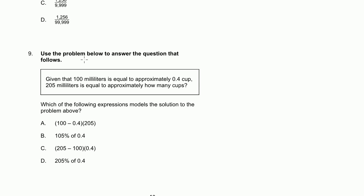We're on problem nine. Use the problem below to answer the question that follows. Given that 100 milliliters is equal to approximately 0.4 cups, 205 milliliters is equal to approximately how many cups? So we could set up a little ratio here.